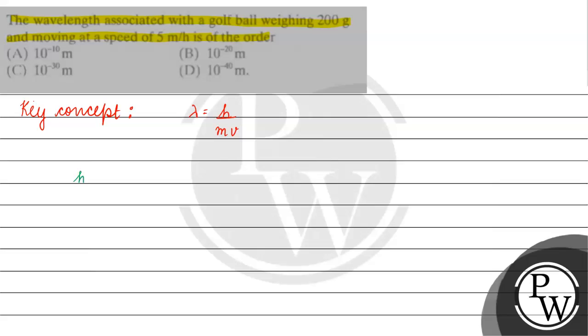Now let's talk about H. H is basically equals to 6.626 into 10 raised to the power minus 34 Joule seconds. If we talk about M, M is equal to 200 grams. 200 grams in kilograms is 200 into 10 raised to the power minus 3 kilograms, because 1 gram equals 10 raised to the power minus 3 kilograms.